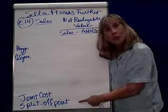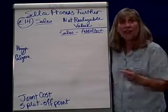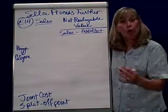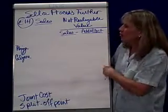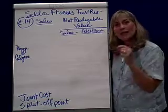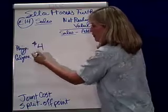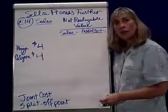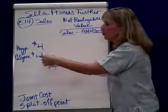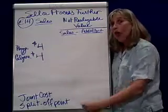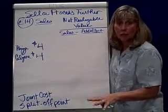At a certain point, called the split-off point, we split it up into all the different things that can be made from a barrel of oil or from a cow. Going back to pizzas and calzones, we're going to do exercise 14. We can sell frozen pizzas for $4 a pizza and frozen calzones for $4 a calzone. Notice I'm not looking at any costs incurred to make the pizzas or calzones to this point, because they're a sunk cost or a joint cost — they've already been incurred.